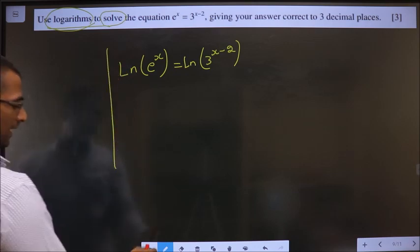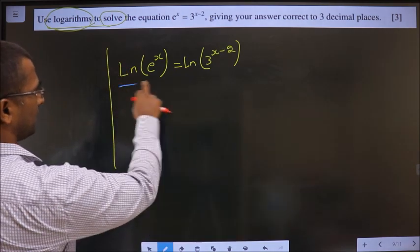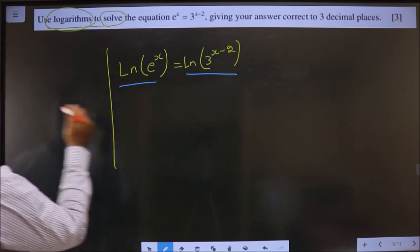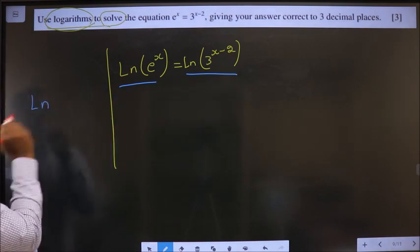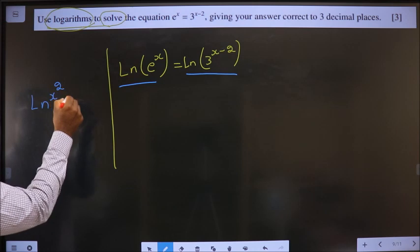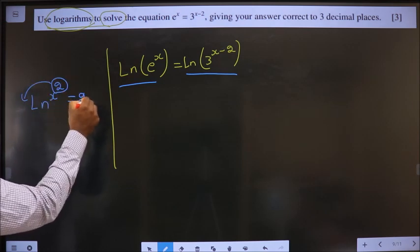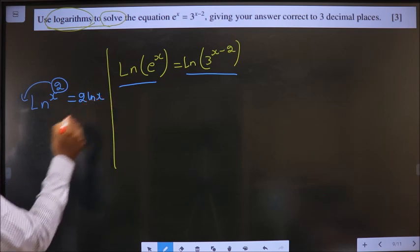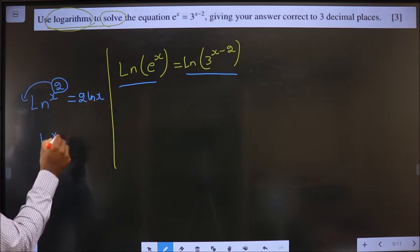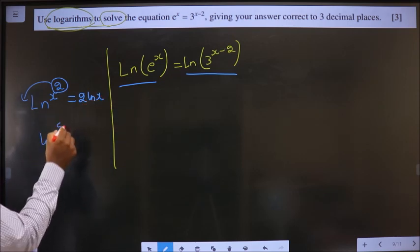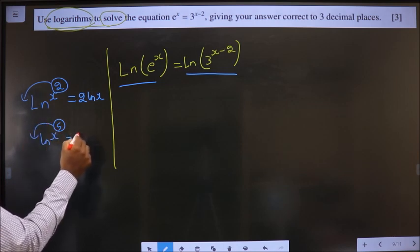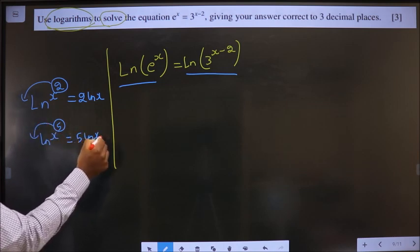What property can I make use here and also here? Is this one. ln x power 2. The power will come before the logarithm resulting in 2 ln x. Another example. Had it been x power 5. This 5 will come before ln resulting in 5 ln x.